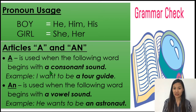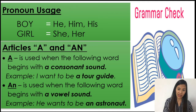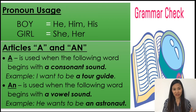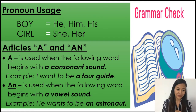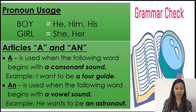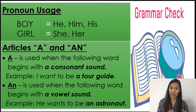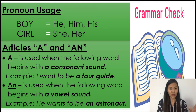'A' is used when the following word begins with a consonant sound. What is a consonant? We have B, C, D, F, G, H, J, K, L, M, N, P, Q, R, S, T, V, W, X, Y, Z. Remember it is about sound — a consonant sound. A word that begins or starts with a consonant sound. Not a consonant word, but a consonant sound. That is for the article 'A.'